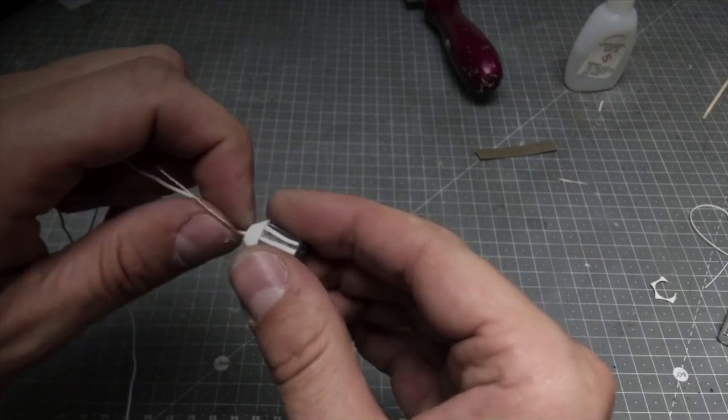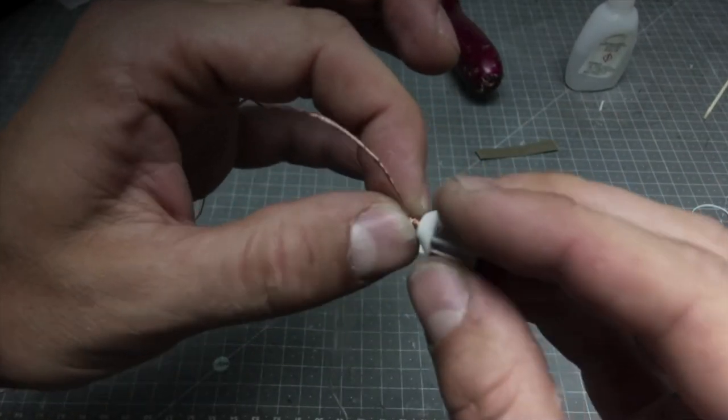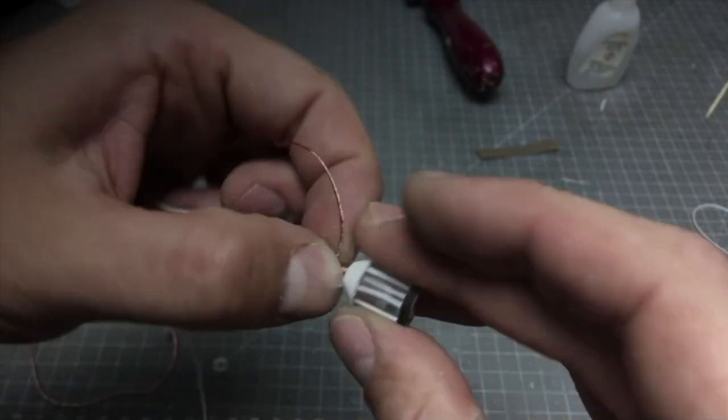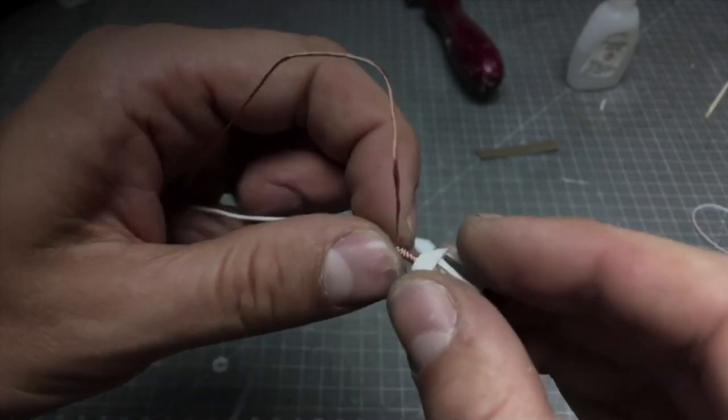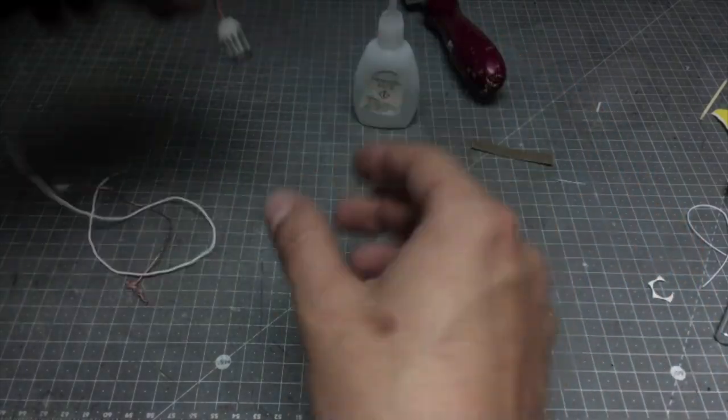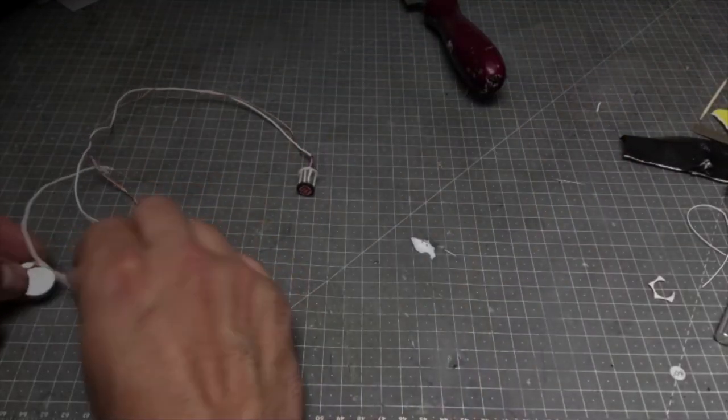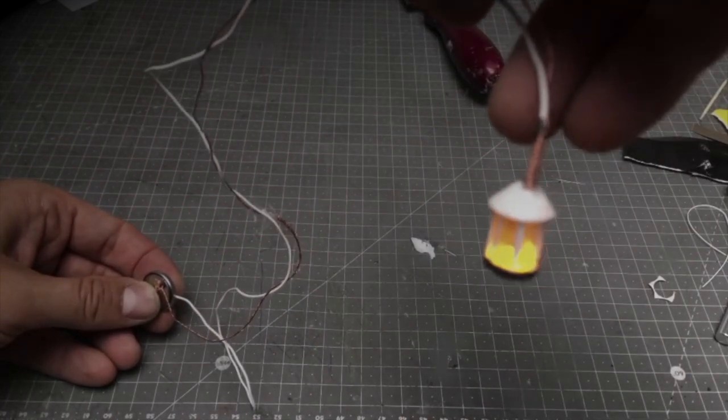Now we just need to make a rope on which the lantern will hang. I'm slowly twisting exposed copper cable around the encased one. It will help to create an illusion of rope. I'm adding also a drop or two of super glue on both ends just to keep the twisted wire in place. I'm checking one more time if everything is working. Yeah, looks good. We can move forward.